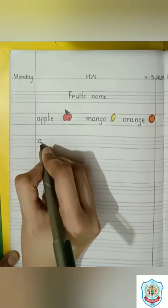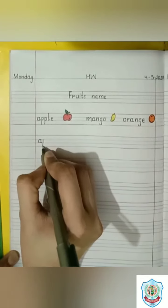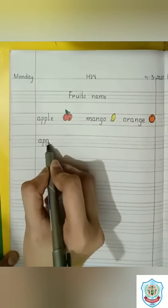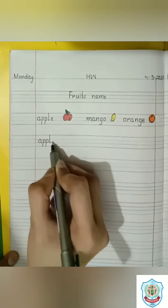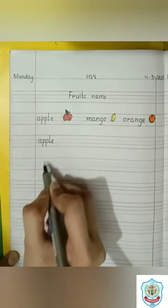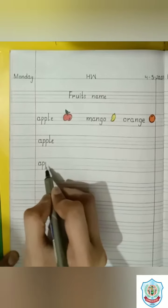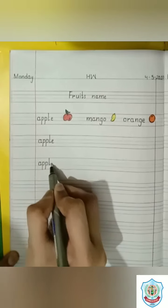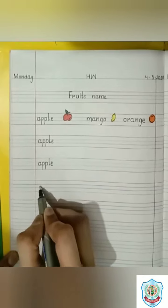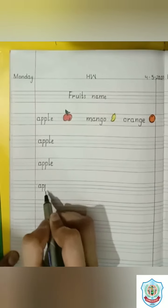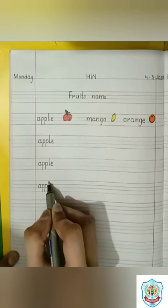Write here apple. A, double P, L, E. Apple. A has a sound A. Double P makes a sound P. And L, E makes a sound L. Apple. Apple. Students, do you know we must eat one apple in a day.